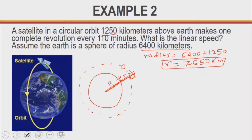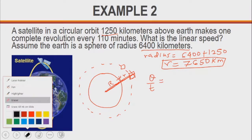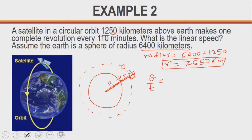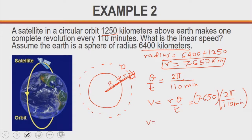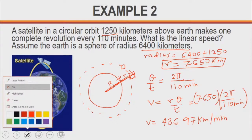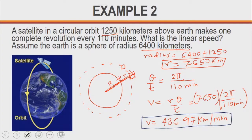We are told that the satellite makes a complete revolution every 110 minutes. So it makes one complete revolution, that means 2 pi divided by 110 minutes. The linear speed is going to be r theta over t. So r in this case will be 7,650 kilometers, multiply by 2 pi over 110 minutes. If you put that into your calculator, v is going to be 436.97 kilometers per minute. Since we are not asked to convert in this case, that is going to be our linear speed.